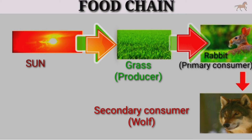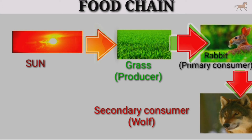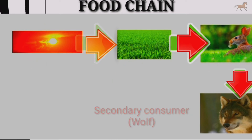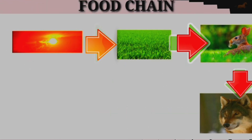A part of that energy goes into the body of the primary consumers, which are the rabbits over here, and a part of the energy received by the rabbits goes into the body of the secondary consumer.